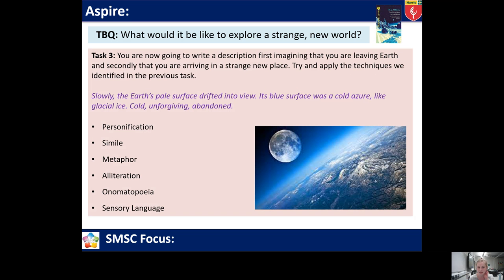So now I'm going to hand over to you and you are going to do a piece of descriptive writing. We've already identified some of these methods: personification — giving something human qualities; simile — comparing two things using 'like' or 'as'; metaphor — a direct comparison, such as 'the Earth was a mother'; alliteration — the repetition of the same sound; and onomatopoeia — sound words, like the click of the shutter. Build upon that sensory language too. What can you see? What can you hear? What could you smell? What could you taste? What could you touch?